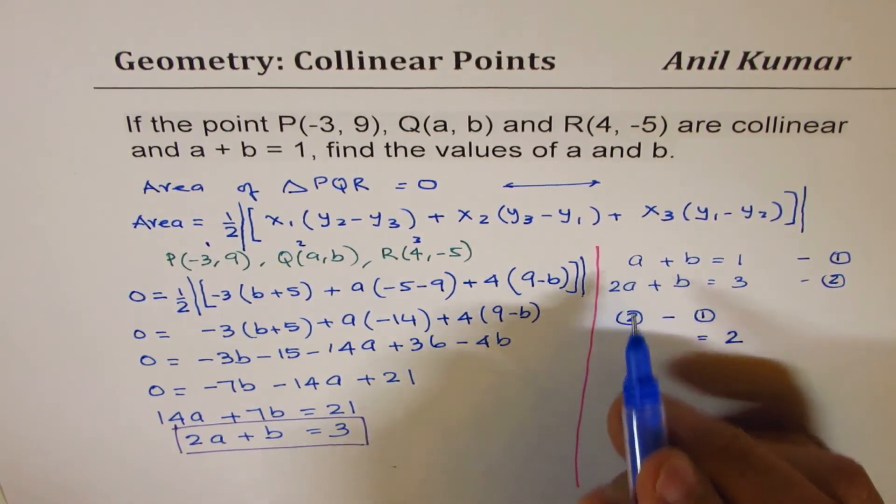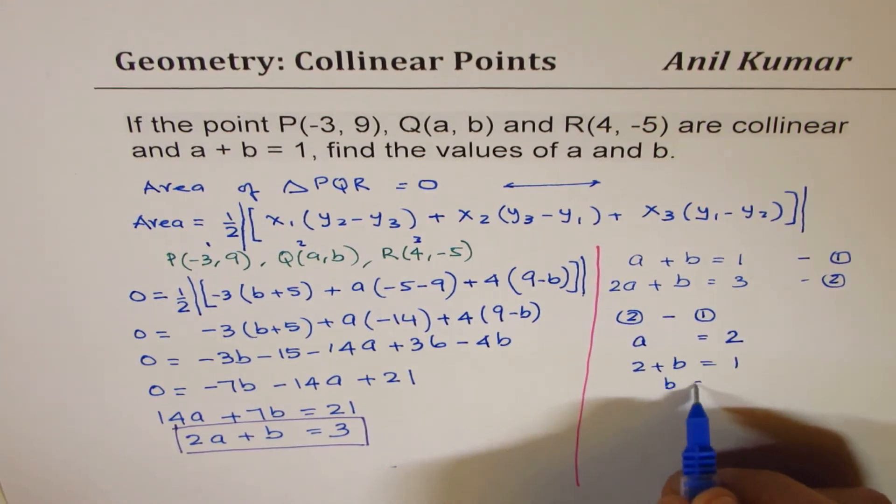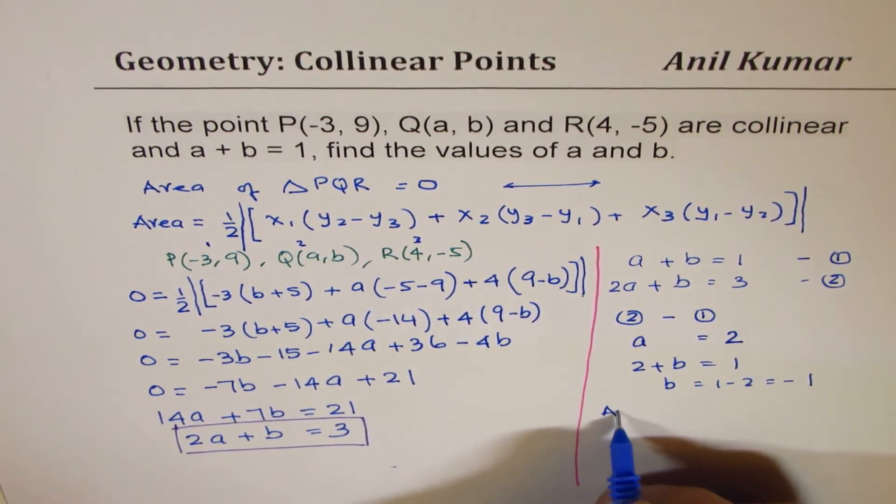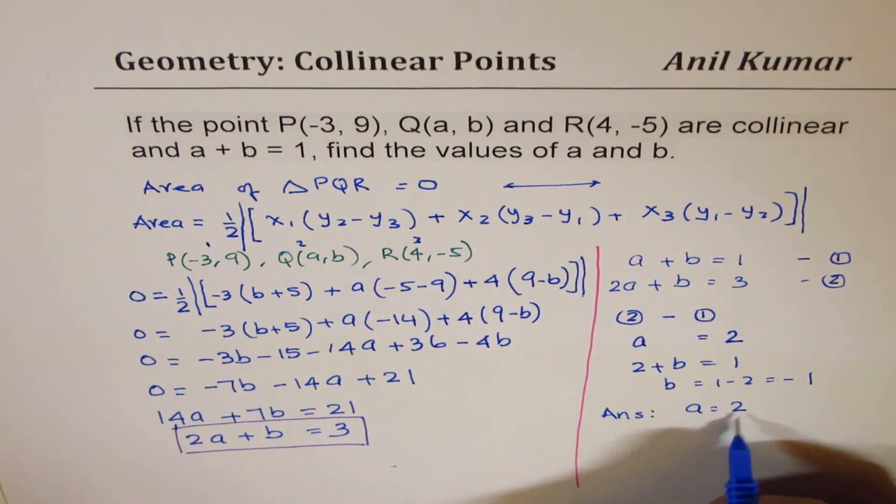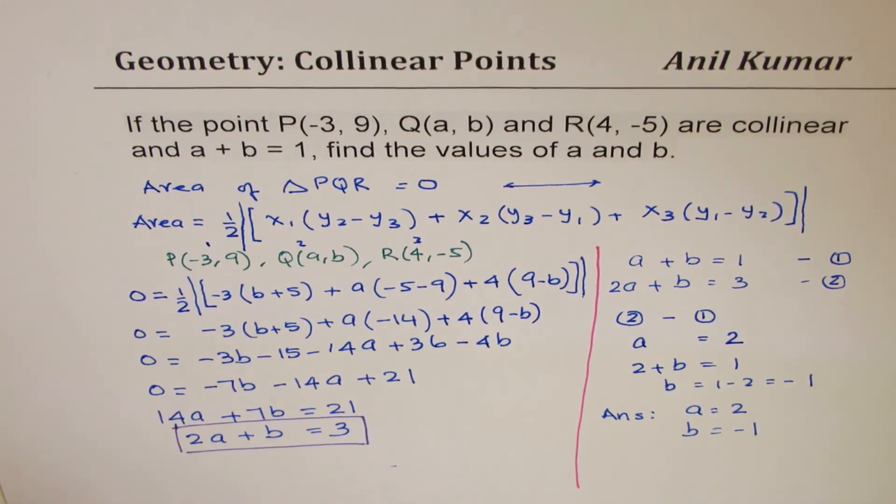As soon as I substitute here 2, I get 2 plus B equals to 1, or B equals to 1 minus 2, which is minus 1. So we get our answer, and that is A equals 2, and B equals minus 1. So that is how we can actually solve this question.